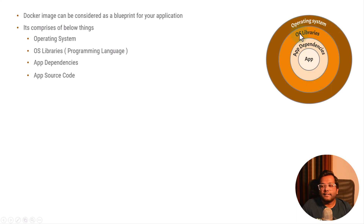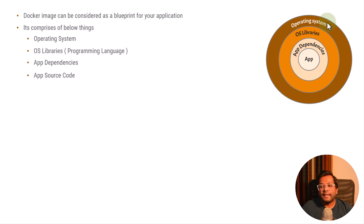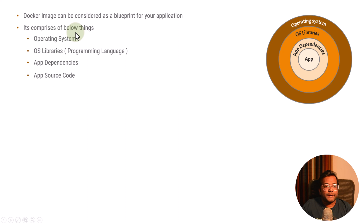The outermost is the operating system, then the OS libraries, then the app dependencies, and then the app — the actual source code you have written. You are trying to execute this application with the help of app dependencies. These app dependencies can depend on the OS libraries, and finally the whole application needs the operating system for creating processes and other interfaces between hardware and the host operating system. So you need this outermost operating system layer for your Docker image.